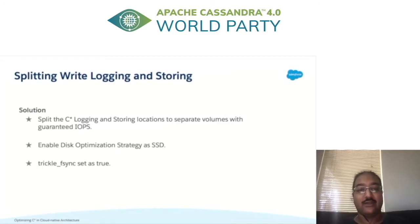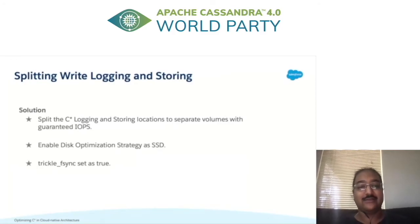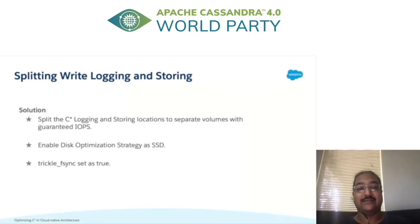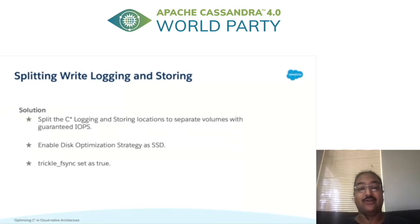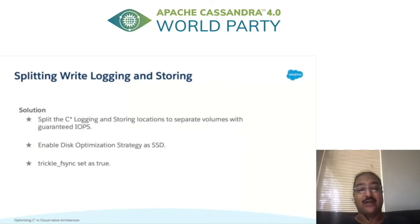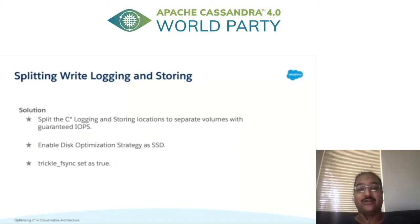With the root causes known, we separated the commit logs and SSTables storage into two separate SSD volumes, which enabled guaranteed IOPS and network bandwidth between the two volumes. We also changed the disk optimization strategy to SSDs, which came as a default option. Based on our findings from the hotspot, we also enabled trickle-fsync to true so that dirty buffers are flushed at regular intervals.